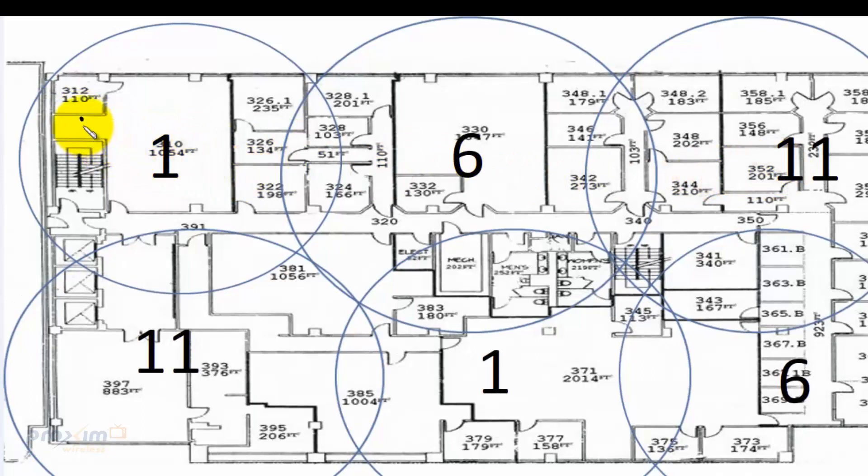What's going to happen is I'm going to start walking, walking, and then all of a sudden these two access points are talking to each other. Now I am handed off to this access point. I continue walking this way, I'm handed over to this access point. And if I want to go down, I'm handed over to this access point.